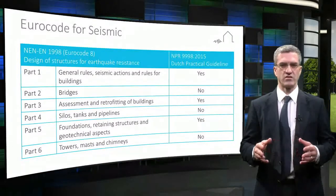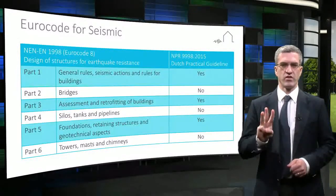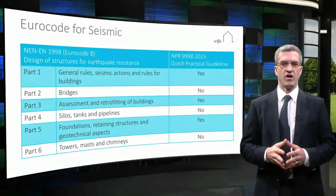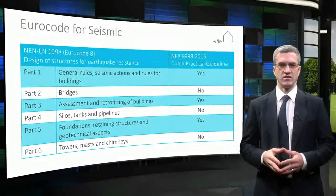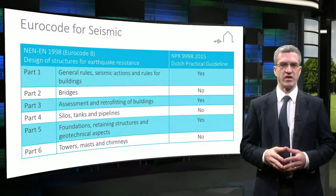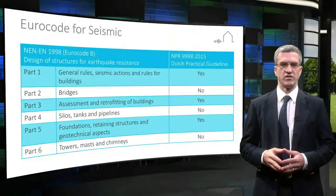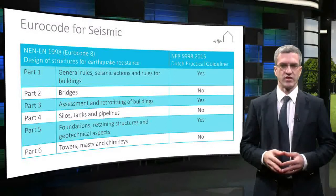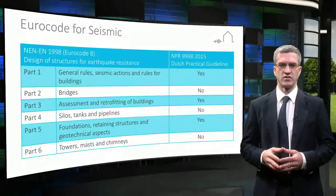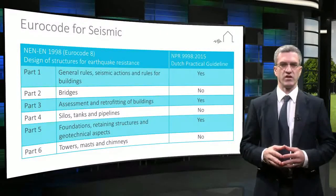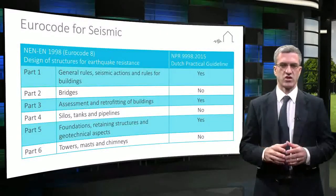Eurocode 8 consists of six parts. Parts 1, 3 and 5 are applicable to new and existing buildings. These three parts are covered by the NPR for induced seismicity in the Groeningen region of the Netherlands. The NPR has many similarities to the Eurocode 8 principles, with additional specific information related to local construction conditions.